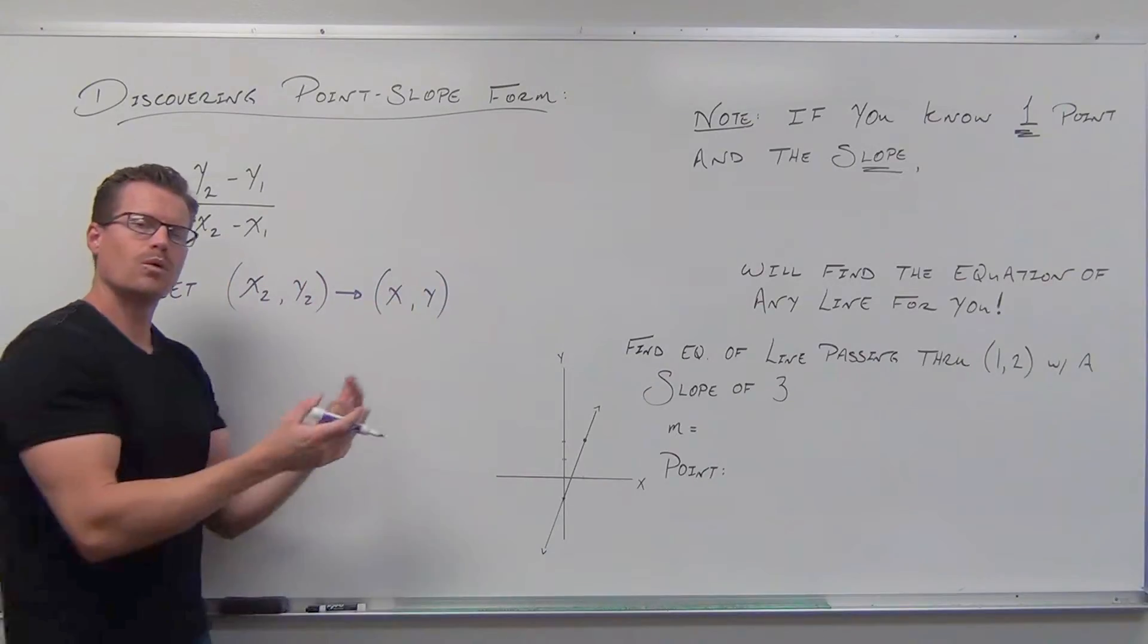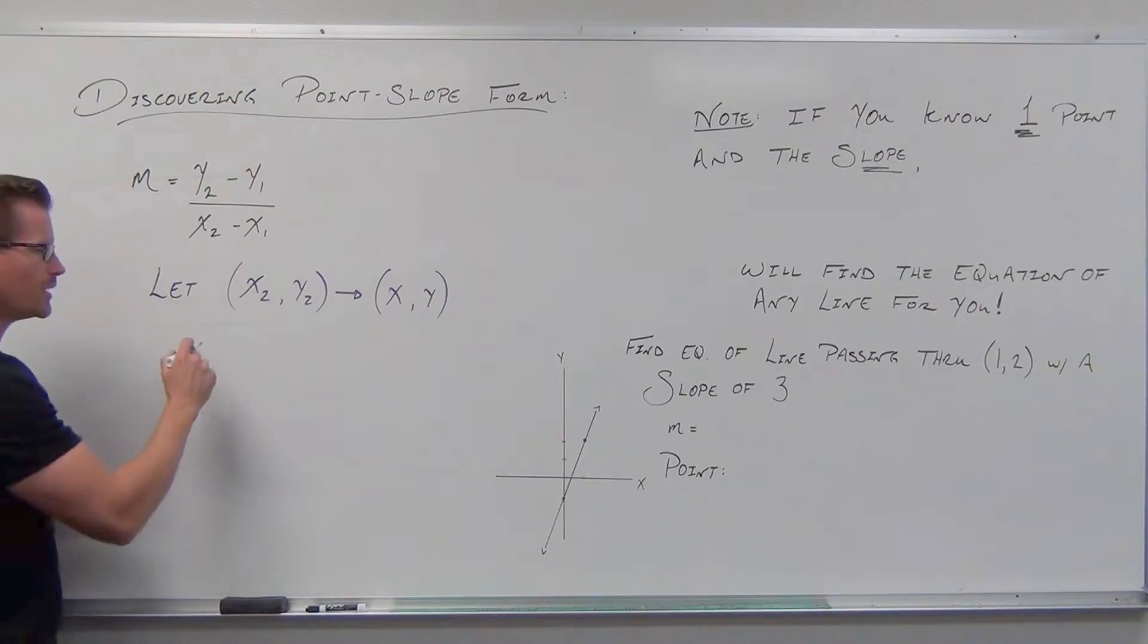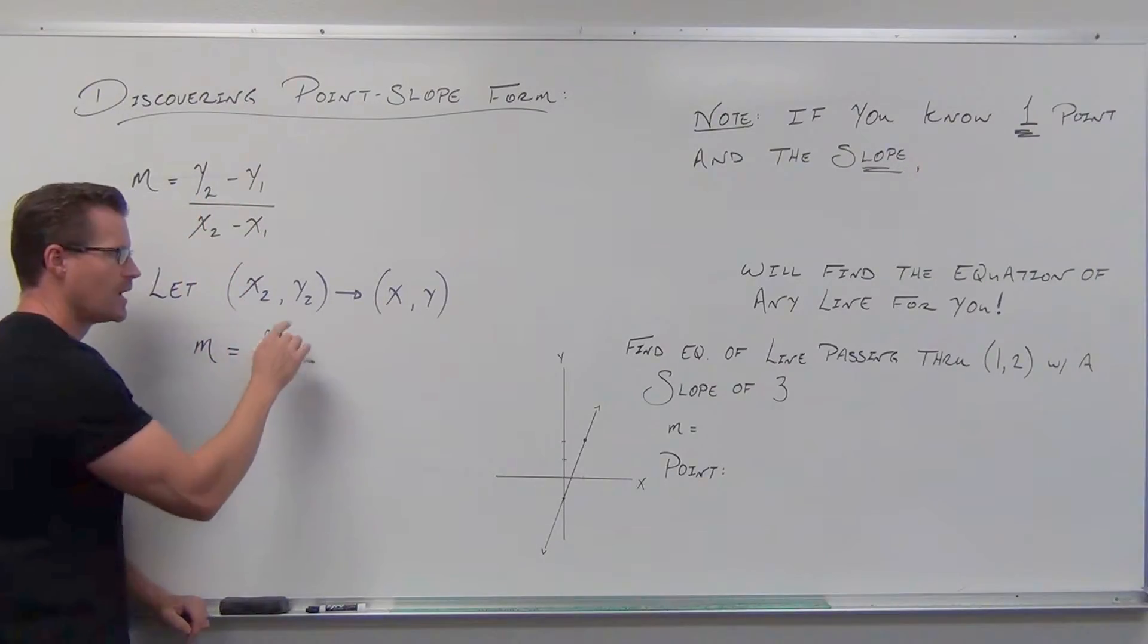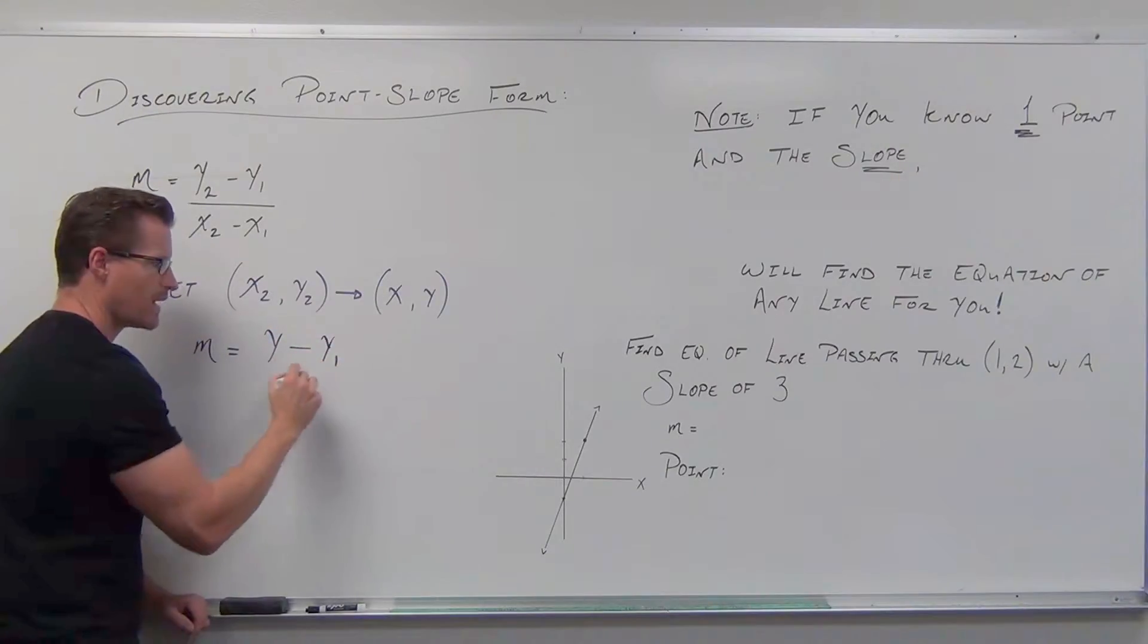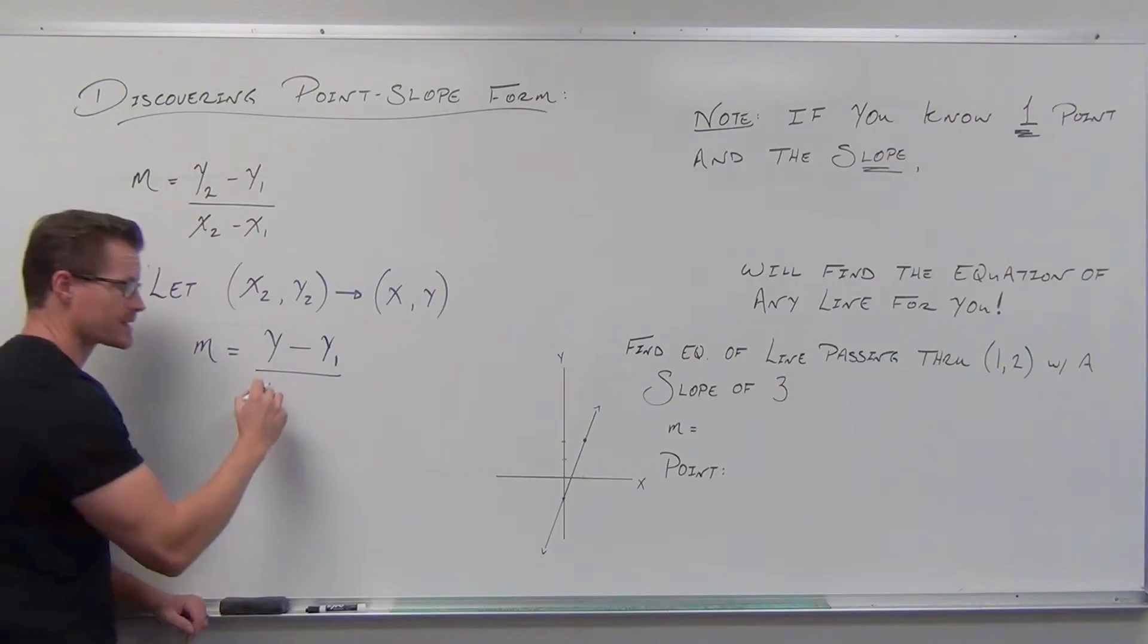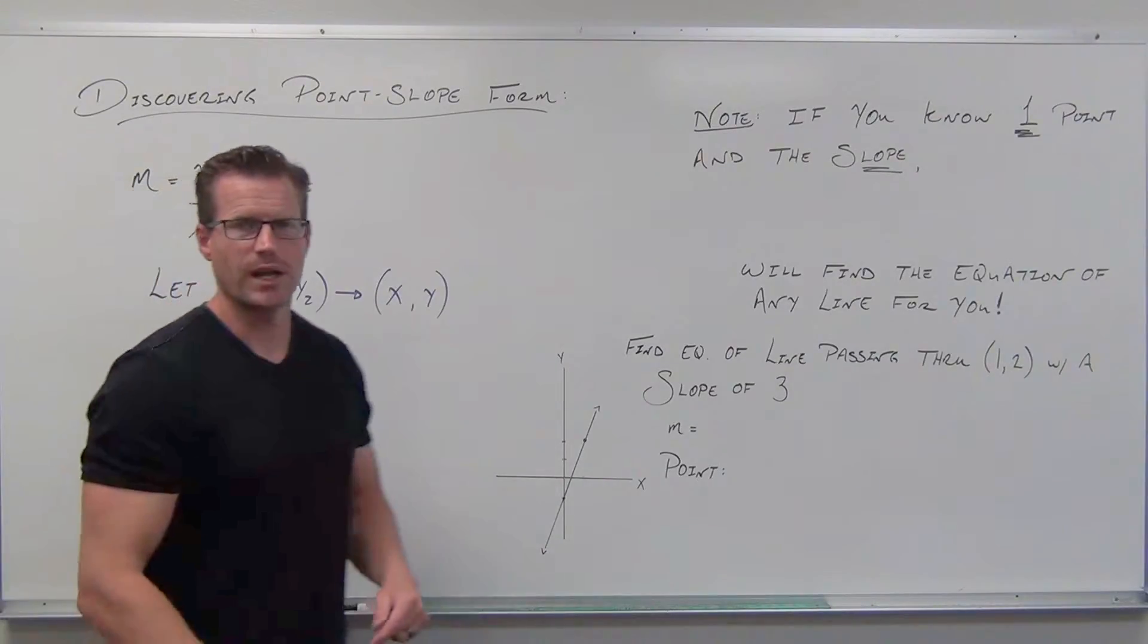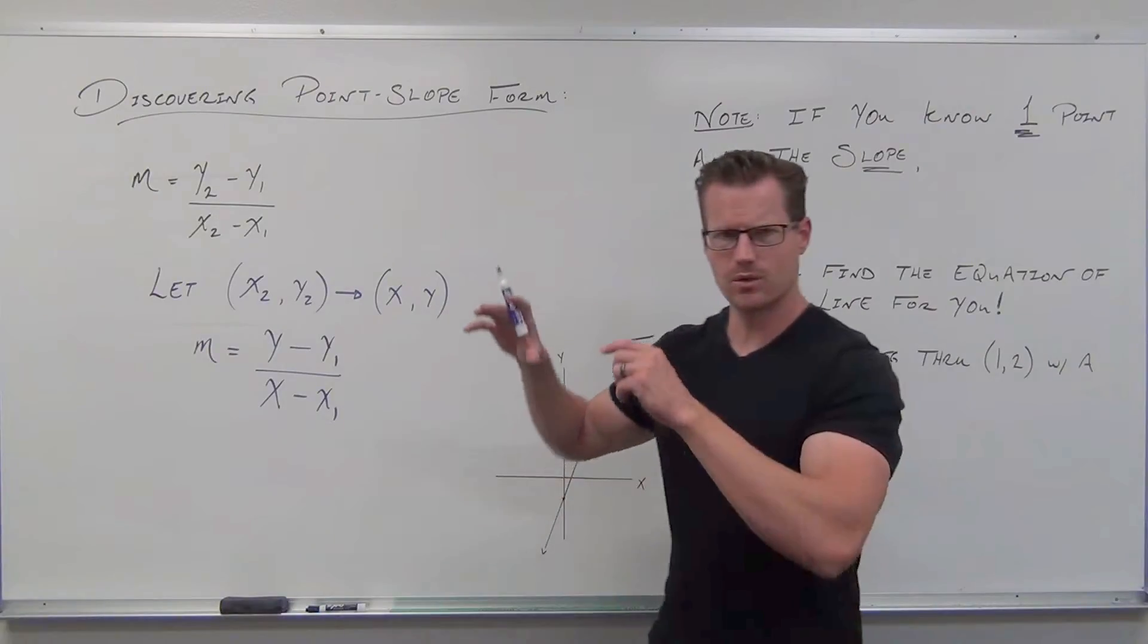Then our slope formula changes just a little bit. Instead of y2 minus y1, I don't have y2 anymore. I just have y minus y1. Instead of x2 minus x1, I don't have that anymore. I just have x minus x1.